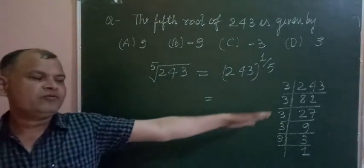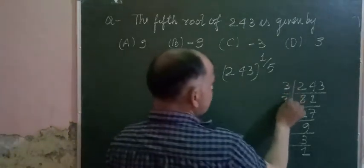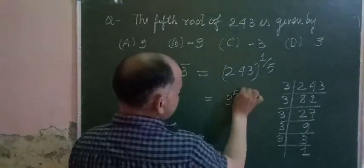So the factorization of 243 is 3 times 3 times 3 times 3 times 3, which is 3 to the power 5.